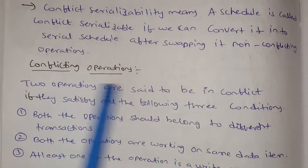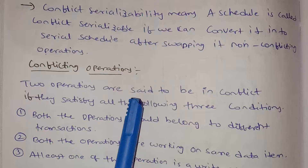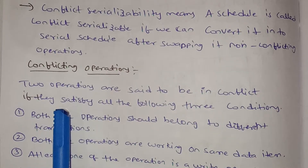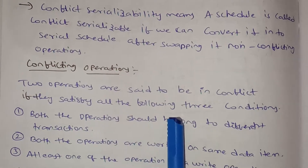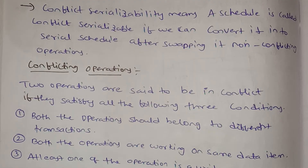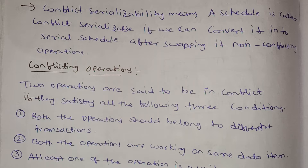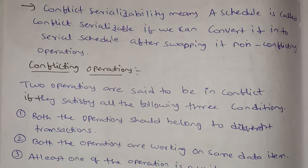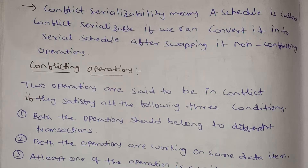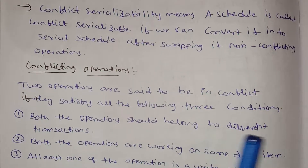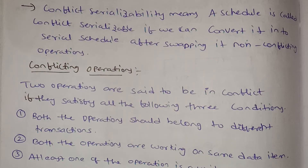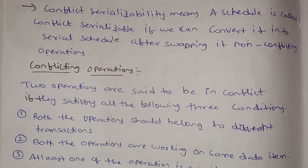Now we have conflicting operations. Two operations are said to be in conflict if they satisfy all of the following three conditions. They belong to different transactions.